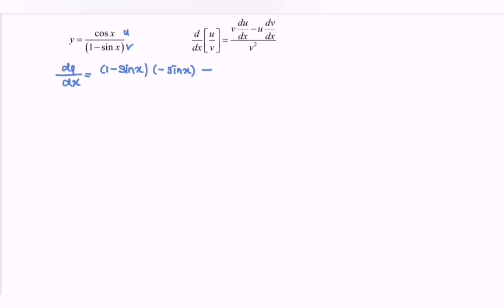Then minus, continue with the u. So here we have the cos x. Multiply with the dv dx, means that v prime. Differentiate 1 minus sin x. So here we will have negative cos x over 1 minus sin x squared.